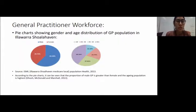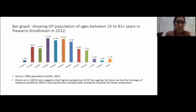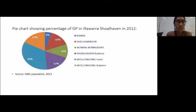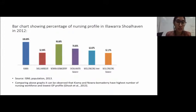Looking at the GP workforce profile, male GPs are approximately 20% more than female GPs, and approximately half of all GPs are above 55 years of age, indicating the workforce is dominated by an ageing population. The GP full-time equivalent per 100,000 population in 2012 shows Illawarra Shoalhaven had 68.1 FTE per 100,000, which is less than both the NSW state figure and the Australian national figure, indicating a potential workforce shortage. GP numbers in Wollongong inner are more than six times higher than in Kiama, while Kiama and Nowra have the highest nursing percentages, showing a clear workforce imbalance.